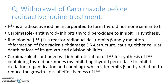When radioactive iodine is given, it is utilized similarly to iodine — incorporated inside the cell — where it emits beta and gamma radiation. Because of this emission of beta and gamma radiation, there will be formation of free radicals, which will damage the DNA structure, causing either cellular death or loss of the cell's growth and division ability.